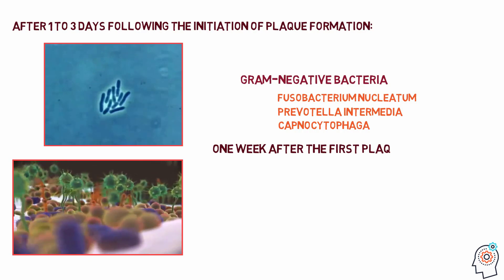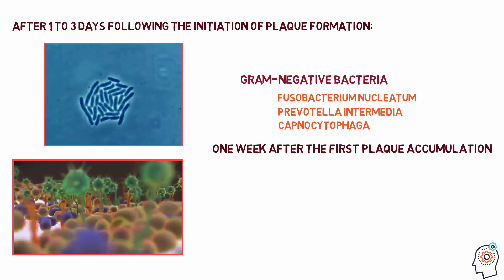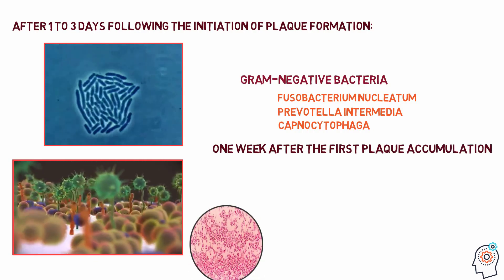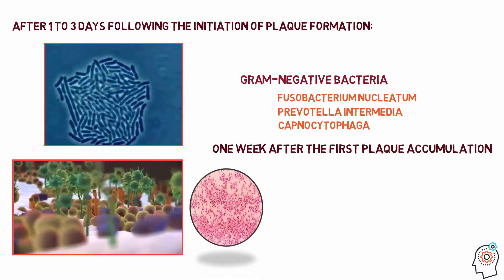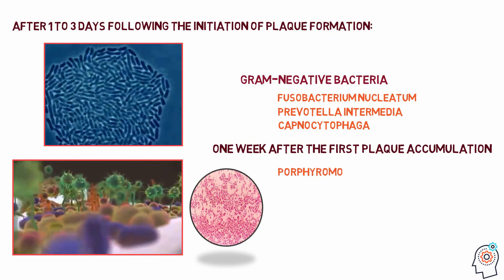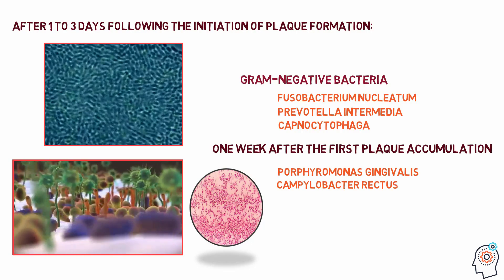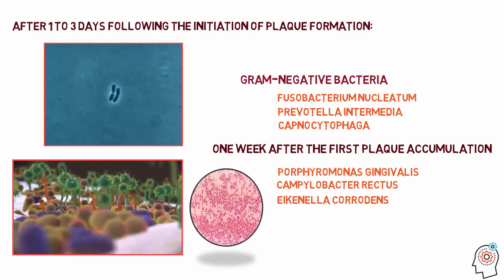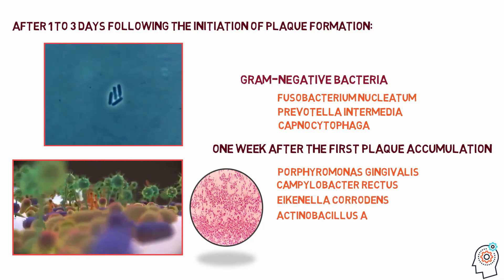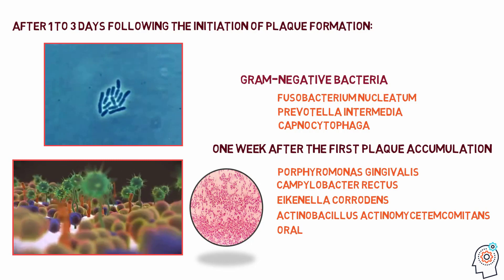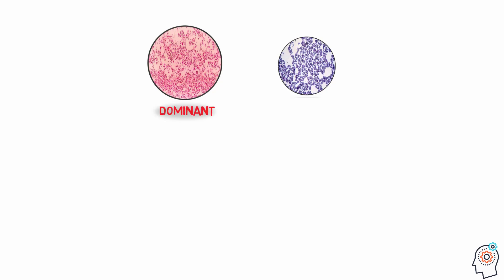One week after the first plaque accumulation, new gram-negative species may be found, such as Porphyromonas gingivalis, Campylobacter rectus, Eikenella corrodens, Actinobacillus actinomycetemcomitans, and Eikenella species. While dental plaque formation continues, gram-negative species become dominant over gram-positive species.